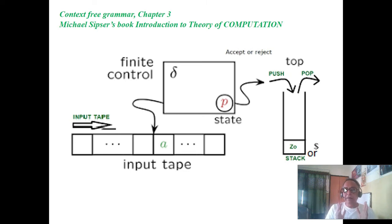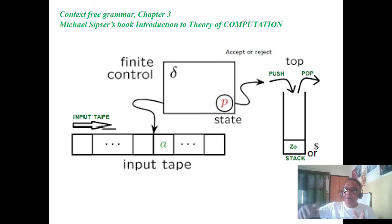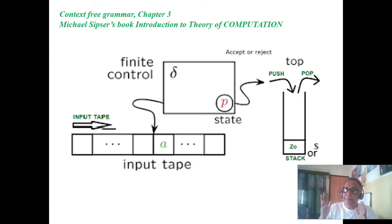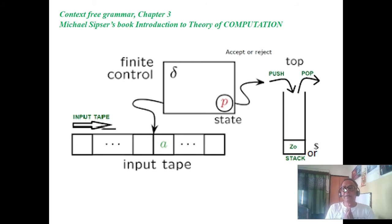A PDA contains deterministic PDA and non-deterministic PDA. An interesting thing about PDA is that the language corresponding to a deterministic PDA is a deterministic context-free language. The complement of a deterministic context-free language is also a deterministic context-free language, but that cannot be said about context-free language overall. Complement of a context-free language may or may not be context-free. Examples of deterministic context-free languages include A to the power N B to the power N, balanced parentheses, and W hash WR.